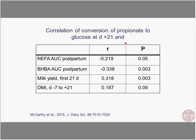When we look at conversion of propionate to glucose at day +21, we see a negative association with NEFA area under the curve, and a stronger relationship with blood ketones. There are positive relationships between propionate conversion to glucose at day 21 and milk yield, and also a trend with dry matter intake. So the liver does reflect what's going on in these cows overall.